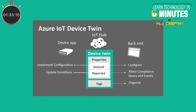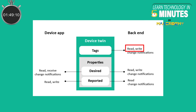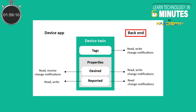A device twin includes tags, desired properties, reported properties, and device identity properties. Tags in device twin JSON documents are generally name-value pairs. Tags can be read from or written to, and can also set notification of changes at the back-end of an IoT application. Tags are only accessible by the back-end and are not visible to the device app.